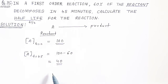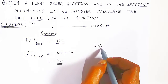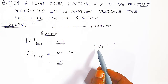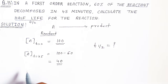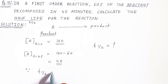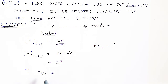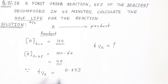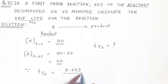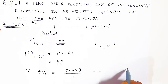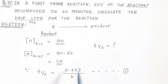Now we have to calculate the half life of the reaction. To calculate T half, you should first know the rate constant. The formula you should know is: T half is equal to 0.693 divided by K, where K is the rate constant. Without this equation you cannot find T half.